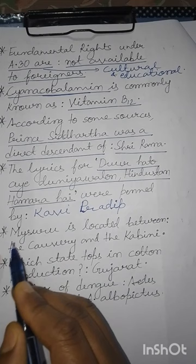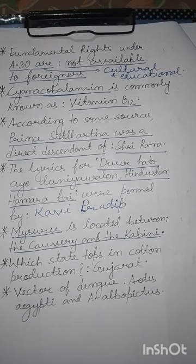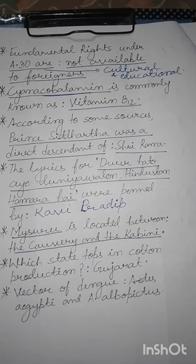Mysuru is located between which rivers? The answer is the Kaveri and the Kabini. काबिनी एवं कावेरी नदियों के मध्य मैसूरू अवस्थित है। So if you are ever asked which river Mysuru is on the bank of, you can mark either Kaveri or Kabini — or both if the option allows.